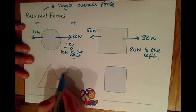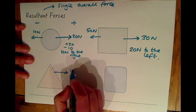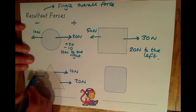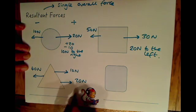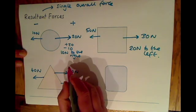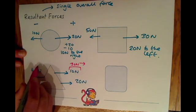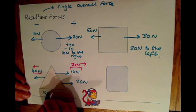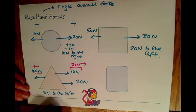This also works if you've got a number of forces acting on one object. For example on this block we could have 10 newtons and 20 newtons acting to the right and 40 newtons acting to the left. In this case you just add up everything on the right — 30 newtons in total — and 40 newtons to the left, so our resultant force would be 10 newtons to the left. Always write the size and the direction: 10 newtons to the left.